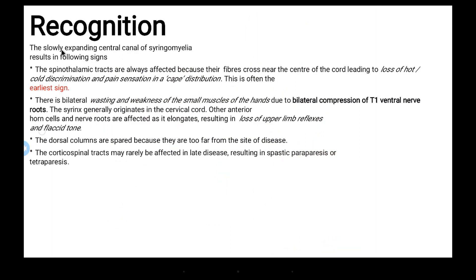The slowly expanding central canal in syringomyelia results in the following signs. The spinothalamic tracts are always affected first, because their fibers cross near the center of the cord, leading to loss of temperature discrimination (hot and cold) and pain sensation in a cape distribution. This is often the earliest sign.